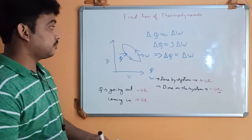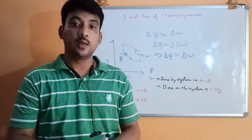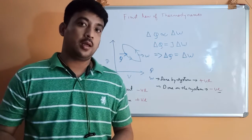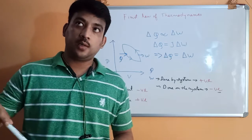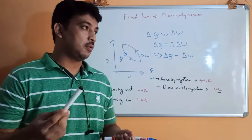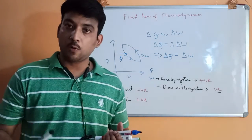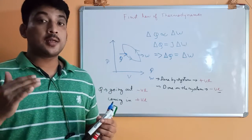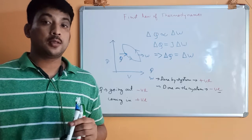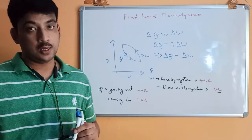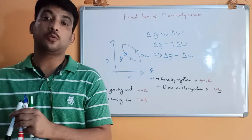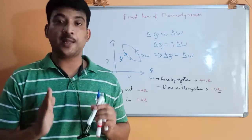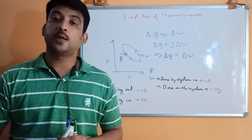So in the case of a cycle, the heat transfer is proportional to the work transfer. One more important thing: heat is a low-grade energy and work is a high-grade energy. Low-grade energy cannot be completely converted to another form — heat cannot be completely converted to work. But work can be completely converted into heat. So work is high-grade energy and heat is low-grade energy.